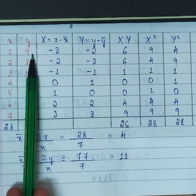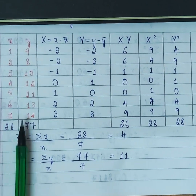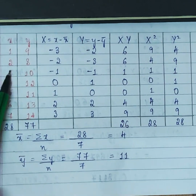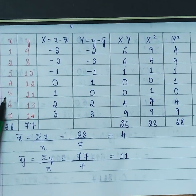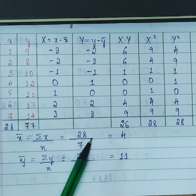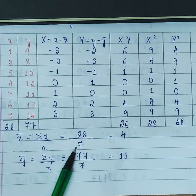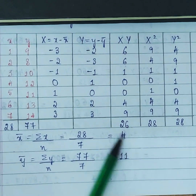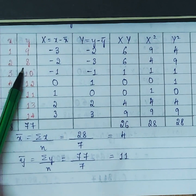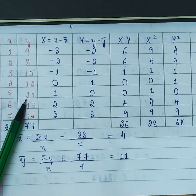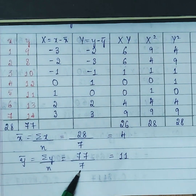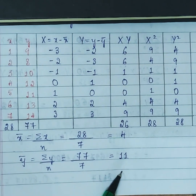First, we will find x̄ by adding all the x values: 1 + 2 + 3 + 4 + 5 + 6 + 7. There are 7 values, so we get 28 divided by 7 — this is the mean of x. Similarly, add all the y values: 9 + 8 + 10 + 12 + 11 + 13 + 14, divided by 7, to get ȳ.